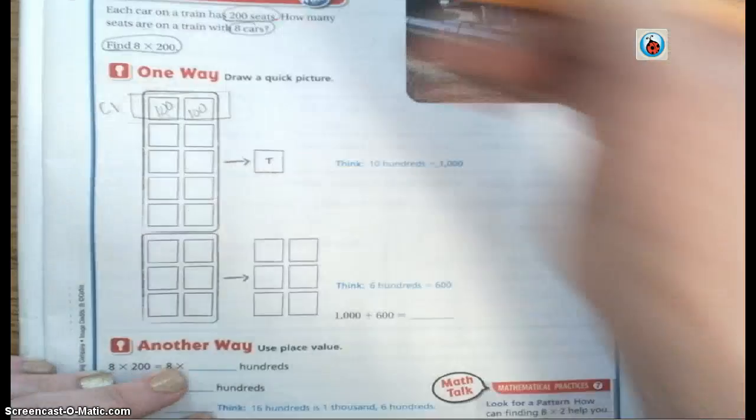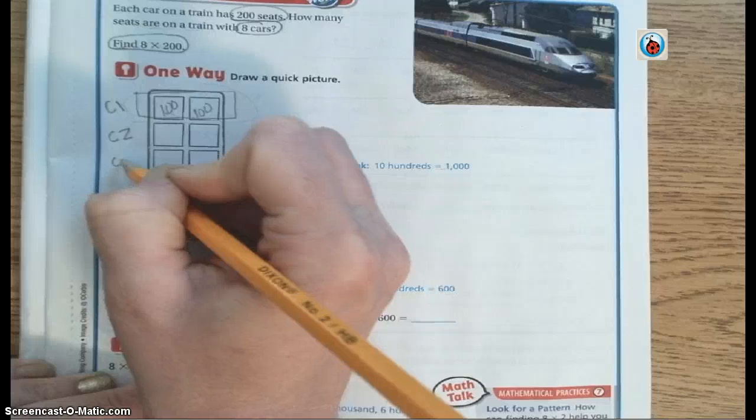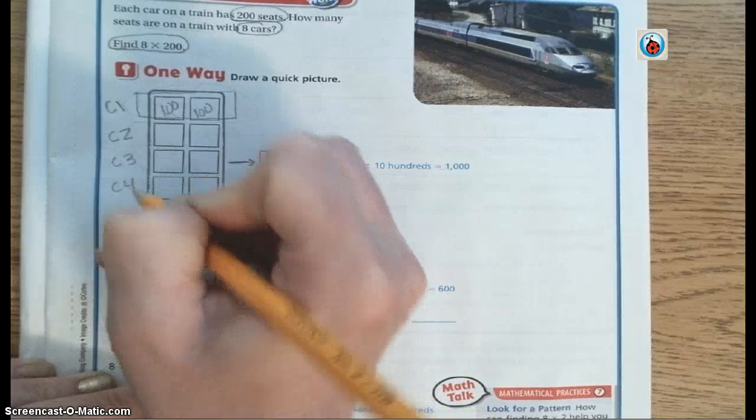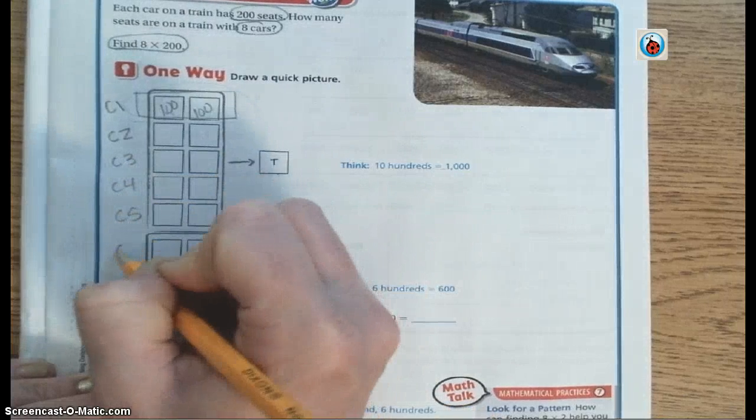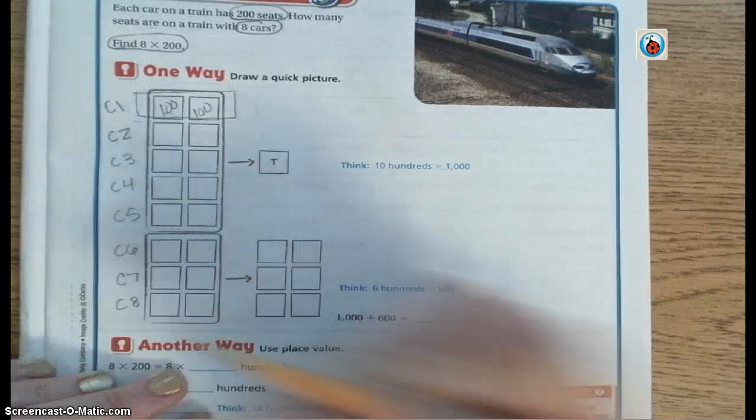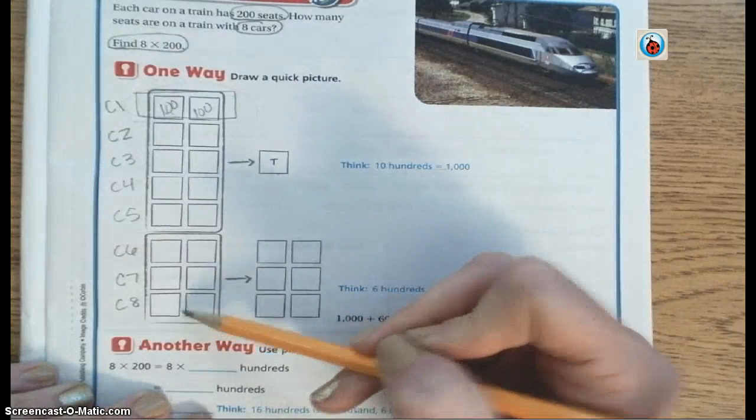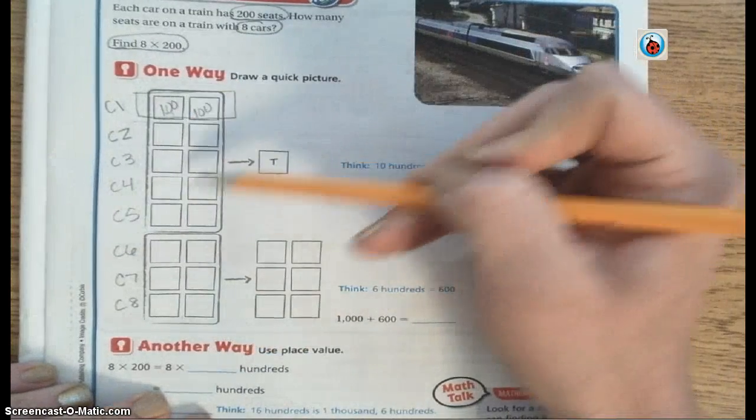So car one, this would be car two, car three, car four, car five, car six, car seven, and car eight. So there we have represented all eight cars, and there are 200 seats for each car.